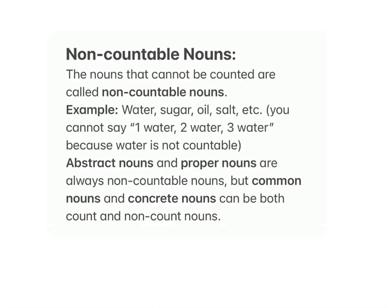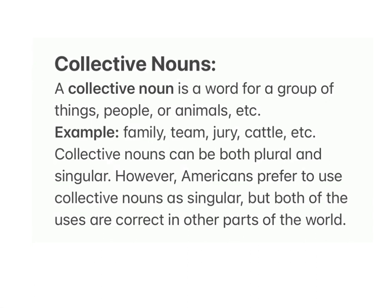Non-countable nouns: the nouns that cannot be counted are called non-countable nouns. Examples: water, sugar, oil, salt, etc. You cannot say one water, two water, three water because water is not countable. Abstract nouns and proper nouns are always non-countable nouns, but common nouns and concrete nouns can be both countable and non-countable.